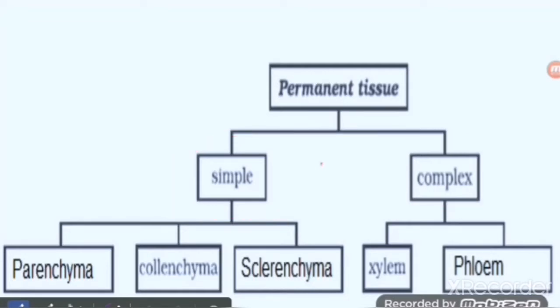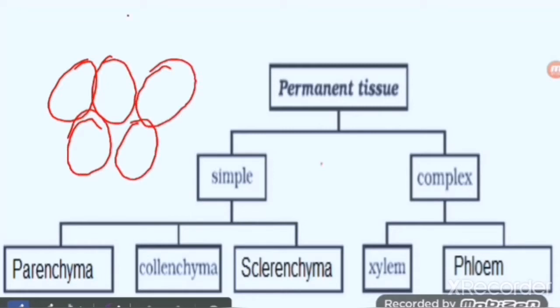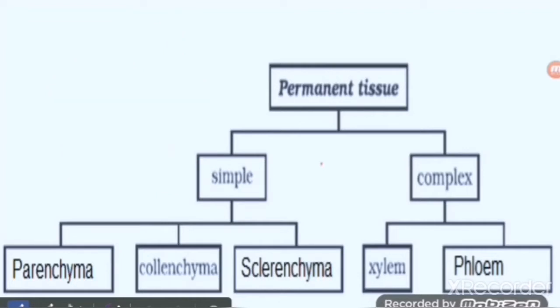When tissues are made up of similar type of cells, they are called simple permanent tissues. Tissues which are made up of different types of cells are known as complex permanent tissues. Simple permanent tissues are categorized into three parts: parenchyma, colenchyma, and sclerenchyma. Complex permanent tissues are categorized into two parts: xylem and phloem.